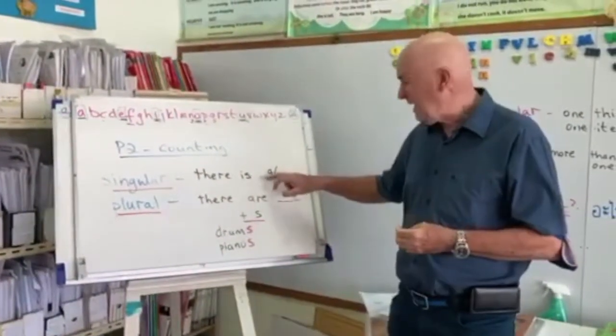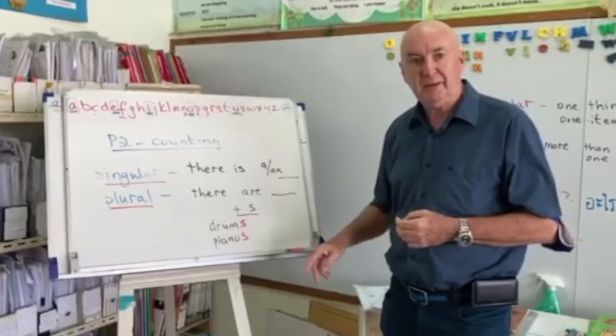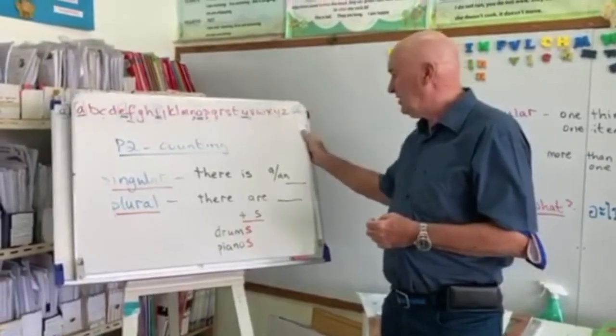Singular, there is a or there is an. Plural, there are. Now, for the second thing,